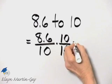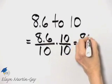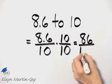So in the numerator, 8.6 times 10 is 86. In the denominator, 10 times 10 is 100.